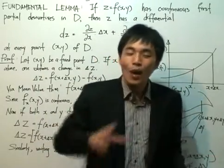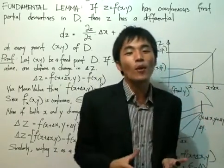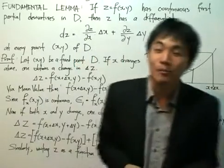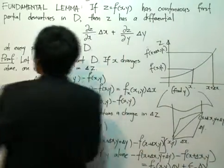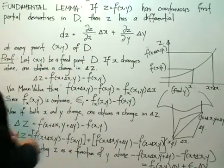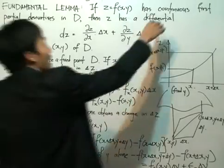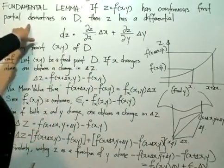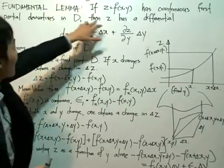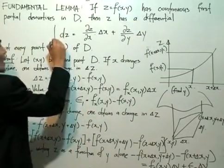From today, we extract a certain lemma from that. This lemma is what we call the fundamental lemma, and it's obviously fundamental because we use it in certain theorems of advanced differential calculus. The fundamental lemma states that if z equals f(x, y) has continuous first partial derivatives in the domain of x and y, labeled as D, then z has a total differential given by this expression.